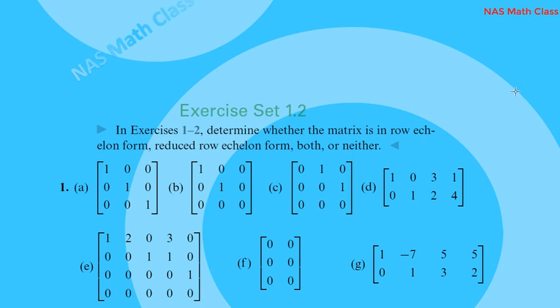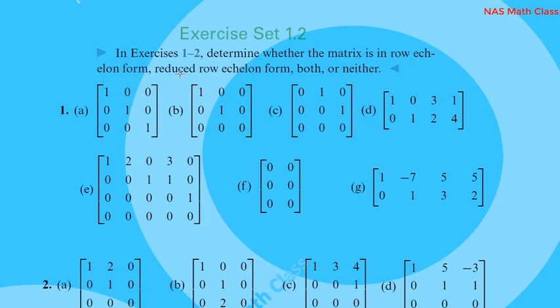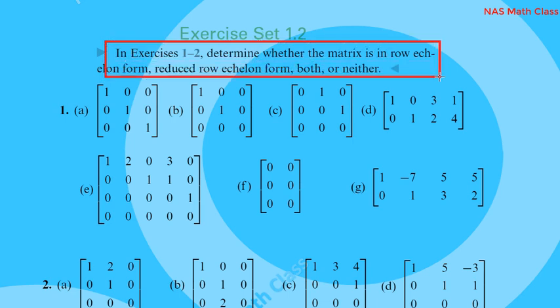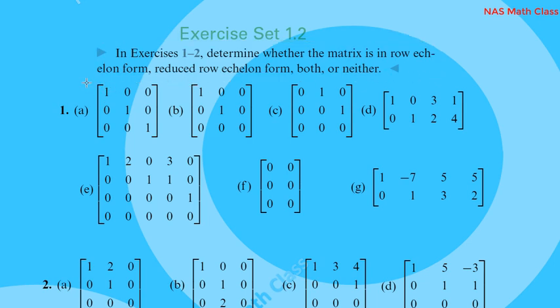This video covers row echelon form and reduced row echelon form. We will do exercises from the book — exercise 1 and 2 — to determine whether a matrix is in row echelon form, reduced row echelon form, both, or neither. I will explain how to work through each matrix.